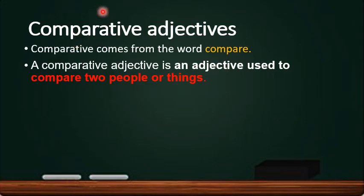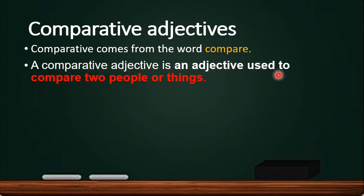Comparative adjective. Comparative comes from the word compare. Compare means that we want to compare two people, things, or animals. A comparative adjective is an adjective used to compare two people or things.